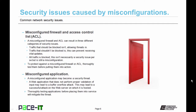A misconfigured firewall or access control list may cause a security issue. These can result in three categories: traffic that should be blocked isn't, allowing threats in; traffic that shouldn't be blocked is, which can prevent receiving vital updates; or all traffic is blocked. This isn't necessarily a security issue per se, but it is still a misconfiguration. A junior network administrator may just remove the ACL or firewall to restore traffic flow, which is itself a security issue. To protect against a misconfigured firewall or ACL, thoroughly test them before putting them into action.